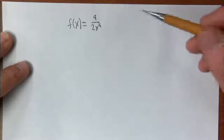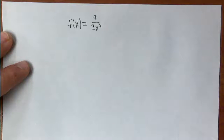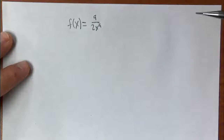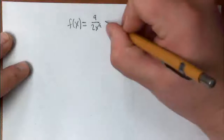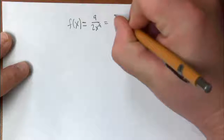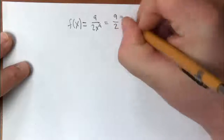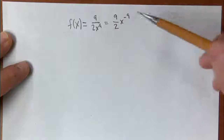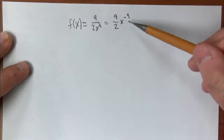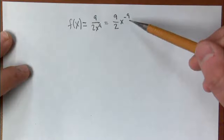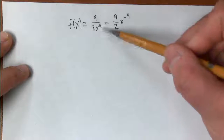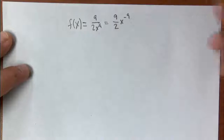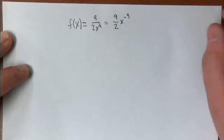The first would be to differentiate as is — just go ahead and use the quotient rule, because we have a quotient of two functions. The other way would be to rewrite this as 9 over 2 times x to the negative 9th, and use the power rule we talked about last week. Let's do it both ways and see how we get the same answer.